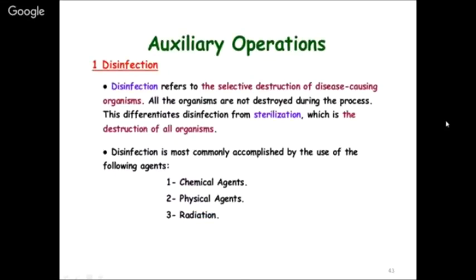Disinfection refers to the selective destruction of disease-causing organisms. Not all organisms are destroyed - this differentiates disinfection from sterilization. Sterilization kills everything by heat, but certain bacteria are needed for biological transformation of sludge, so only selective destruction is required - that is disinfection. Disinfection can be achieved by chemical agents, physical agents, or by radiation.